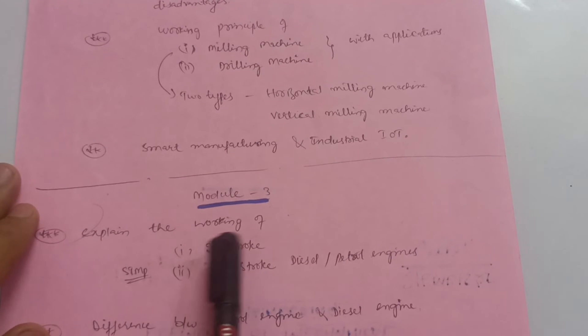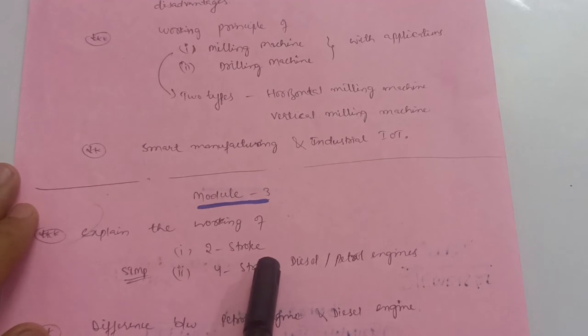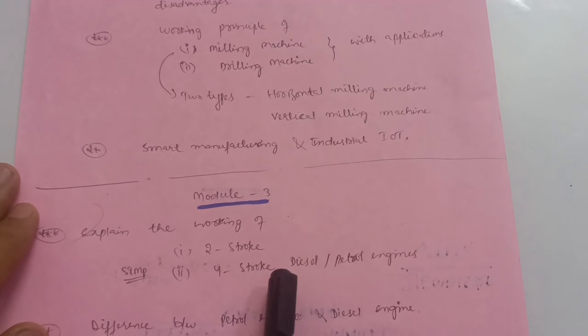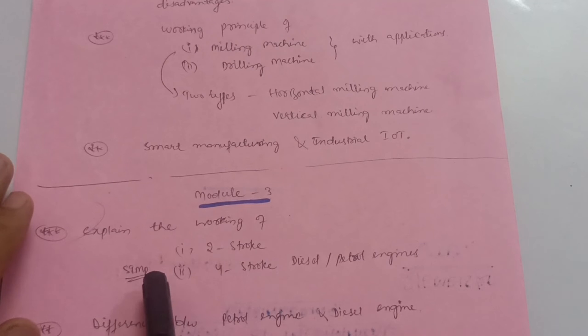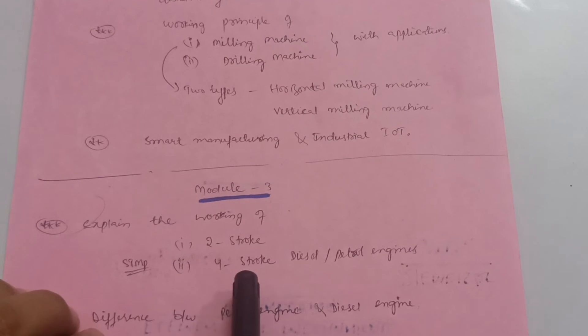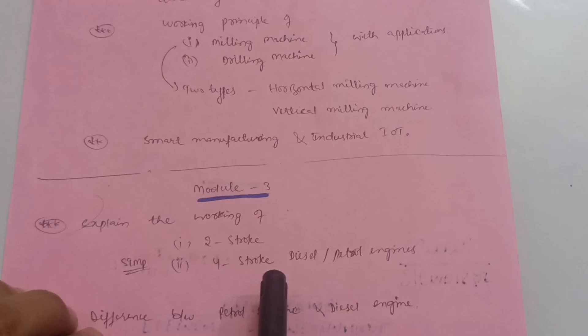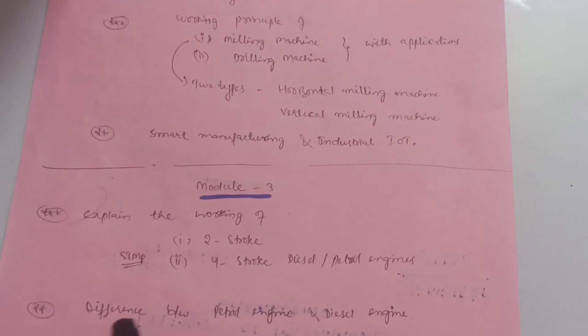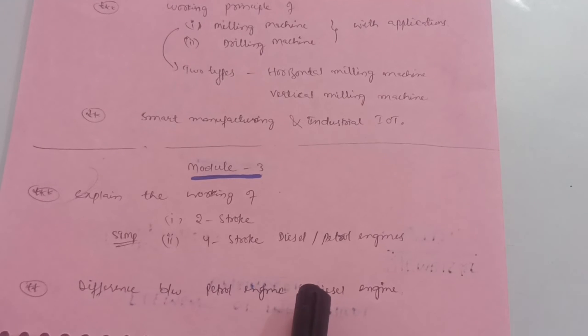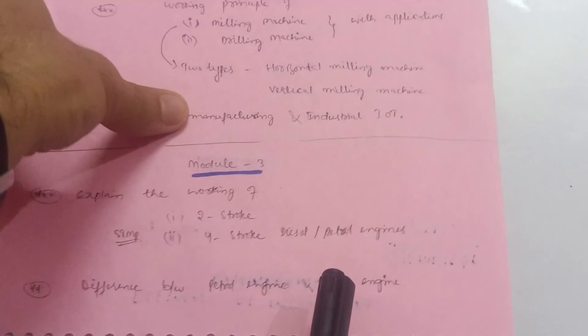You should also have knowledge about smart manufacturing and the Industrial Internet of Things (IoT). This much content is enough to cover Module 5. Now, Module 3 — the most important questions are two-stroke and four-stroke engines. It may be a diesel four-stroke or petrol four-stroke engine — super important questions. There may also be a question to differentiate between petrol engine and diesel engine, which could be an 8-mark question in the VTU examination.